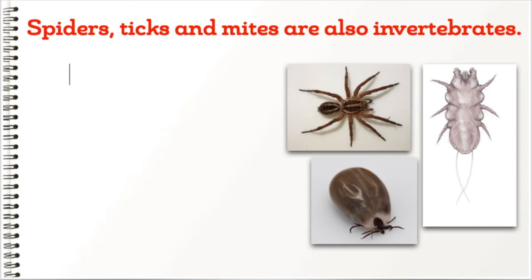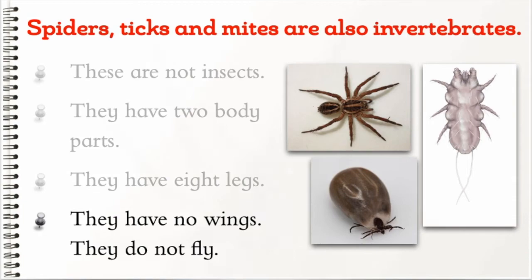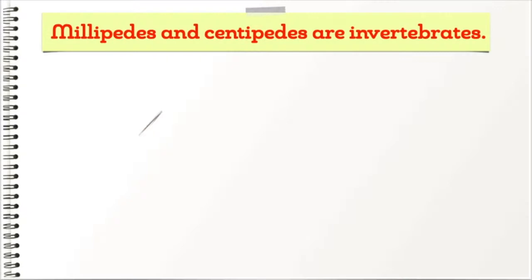Spiders, ticks, and mites are also invertebrates. These are not insects. They have two body parts, they have eight legs, they have no wings, and they do not fly.